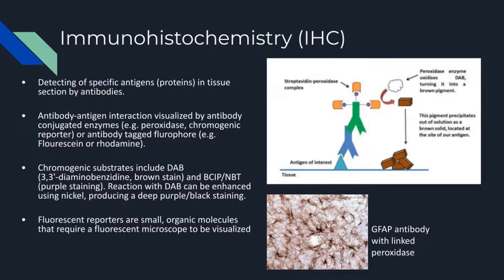As shown in the image on the top right, a brown pigment is formed from DAB as a result of its oxidation by the peroxidase, which is tagged to the antibody. This brown pigment precipitates at the location of our antigen of interest, and this pigment is what we see on an IHC-stained image, such as the one on the bottom right. The pigment is localized to regions of tissue containing the specific antigen. In this sample image, the marker GFAP is being detected with a peroxidase-conjugated antibody.